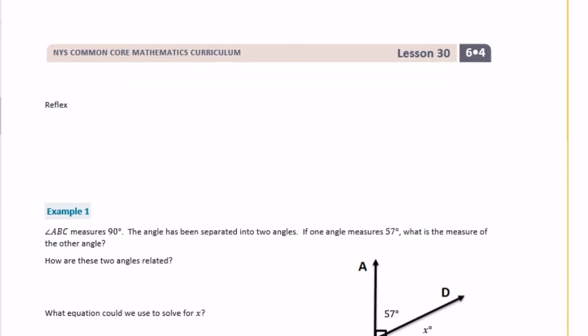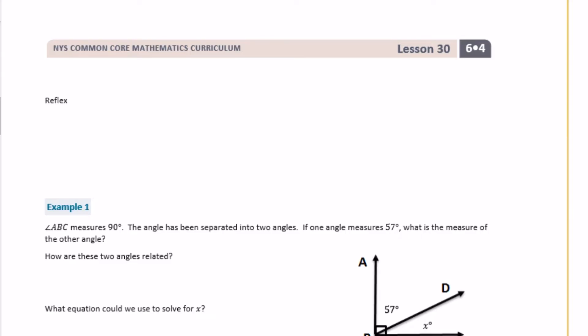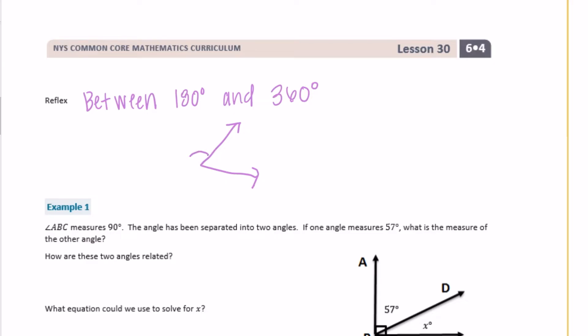And then a reflex angle. A reflex angle is one that I would say is the least common type of angle. It's between 180 degrees and 360 degrees. What you have to do for that is draw an angle, and then it's actually this part of the angle — so it's greater than 180 degrees, but not the full circle of 360 degrees.